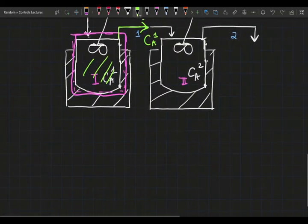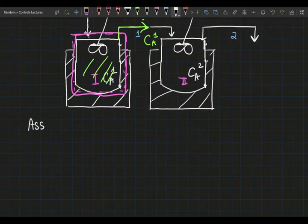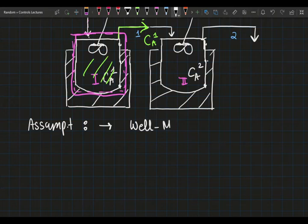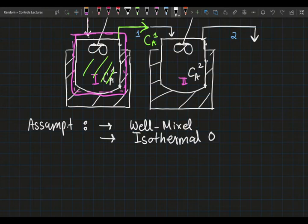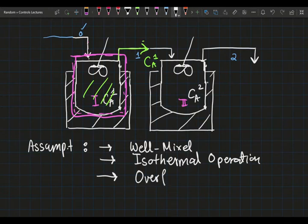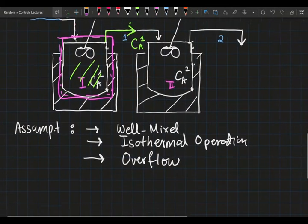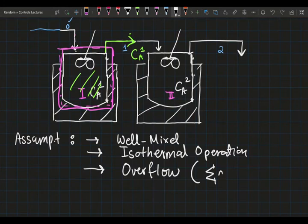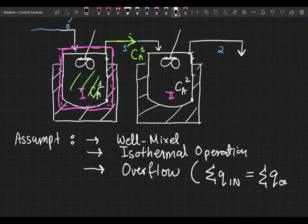Now we're going to develop, I'm just going to list out the assumptions first. My first assumption is well-mixed, obviously, because we have a CSTR. And I also assumed that my reactors are operating isothermal. And the next assumption is, since it's an overflow reactor, the implication is that total volume entering your unit is equal to the total volume leaving the unit. Otherwise, your system cannot operate.